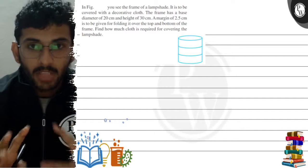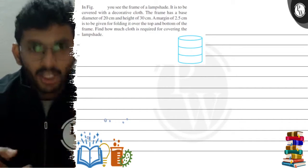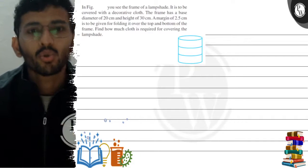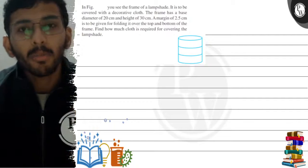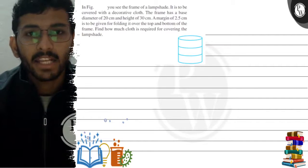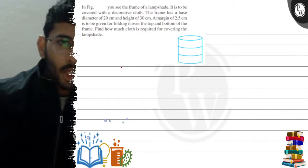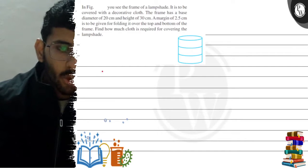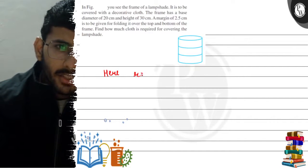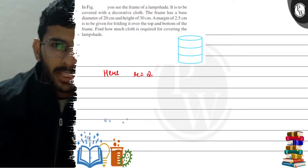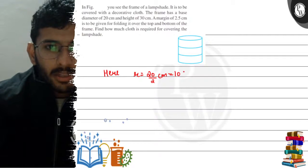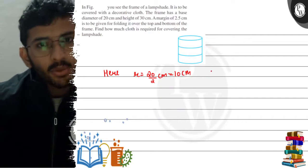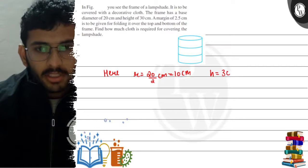The cloth is used to cover the frame, so we need the curved surface area. Here we have a diameter, so the radius will be diameter divided by 2, which is 10 centimeters. The height given is 30 centimeters.